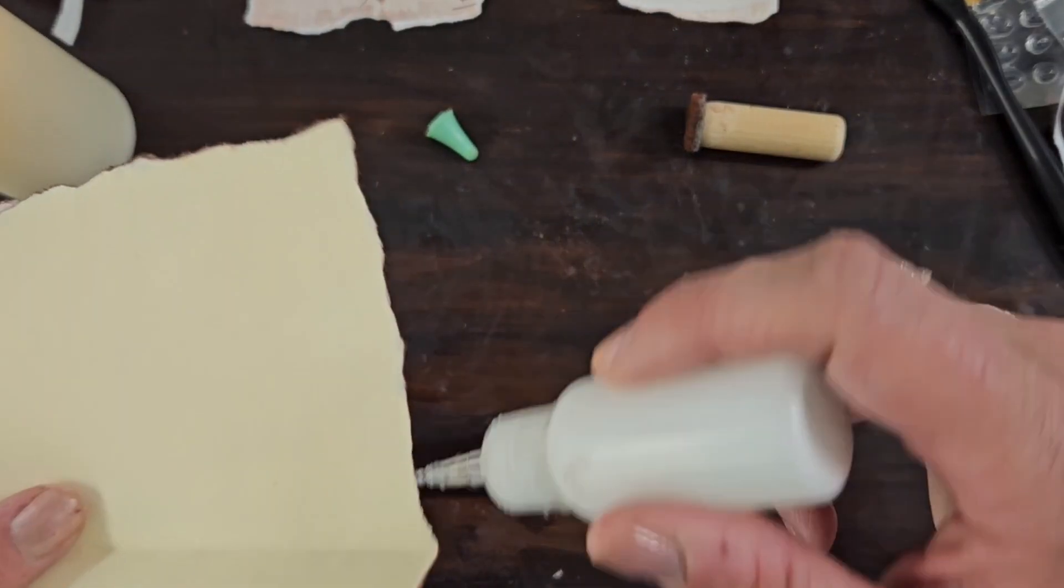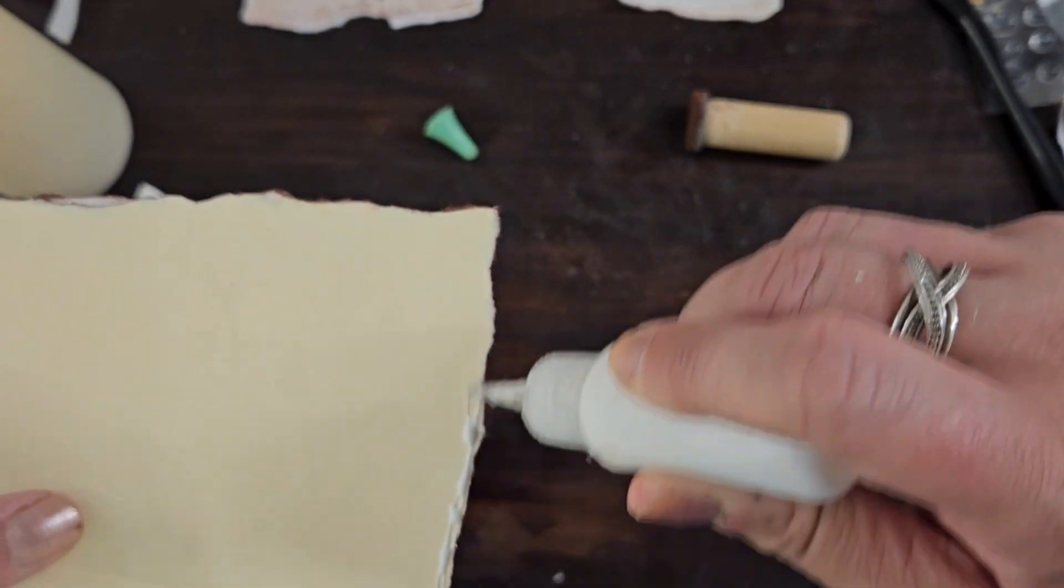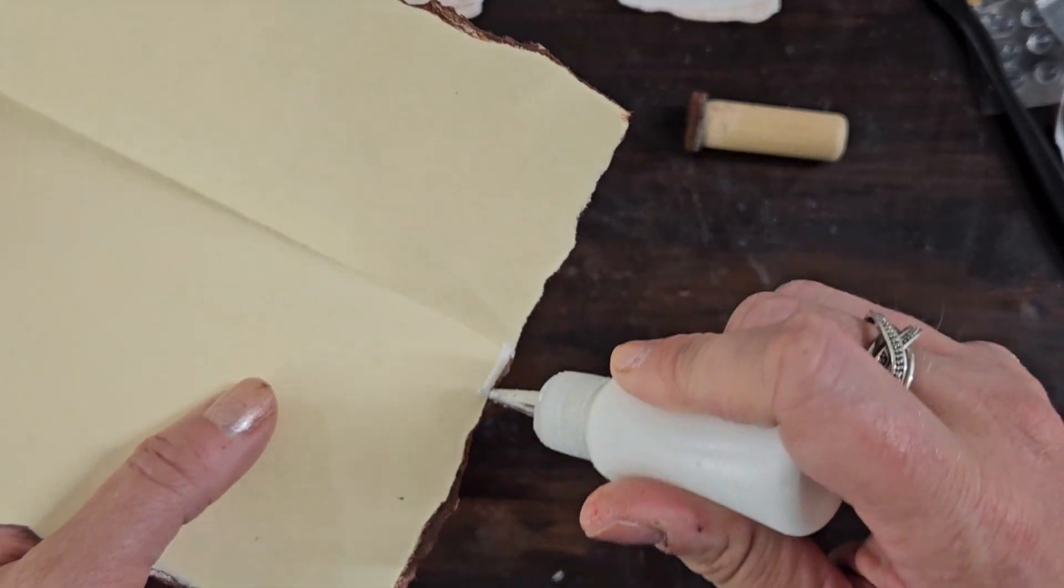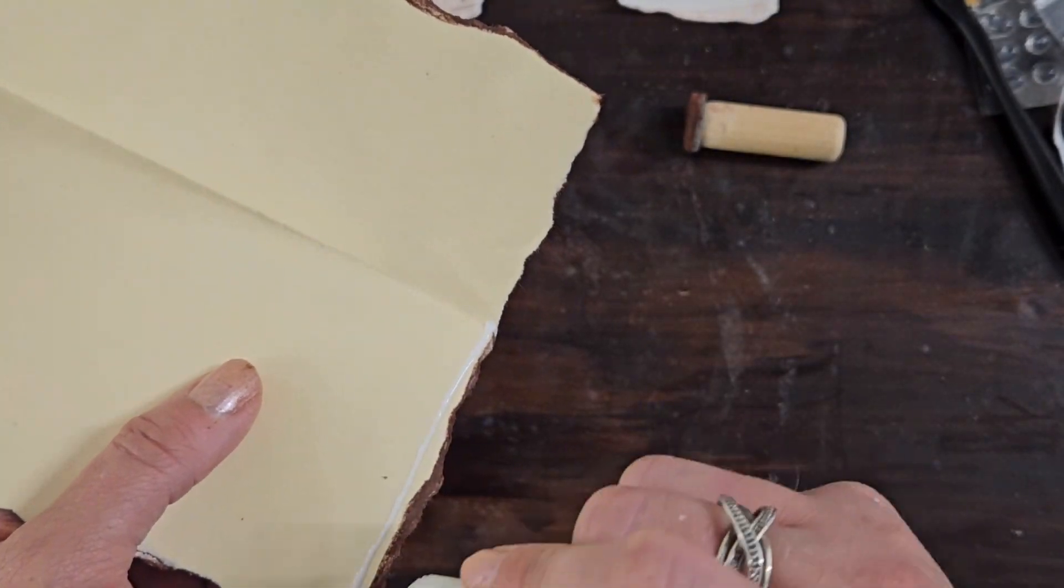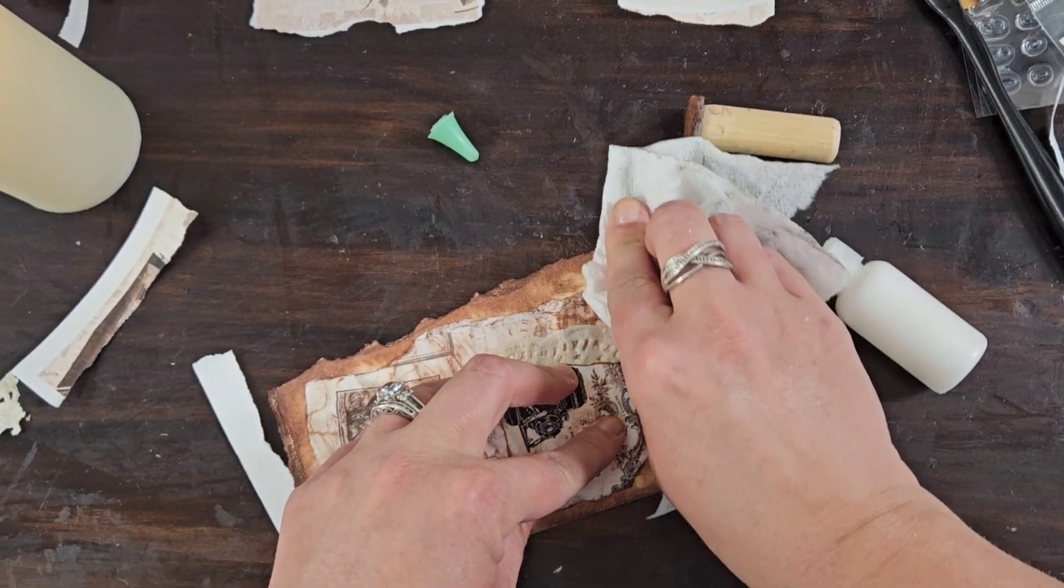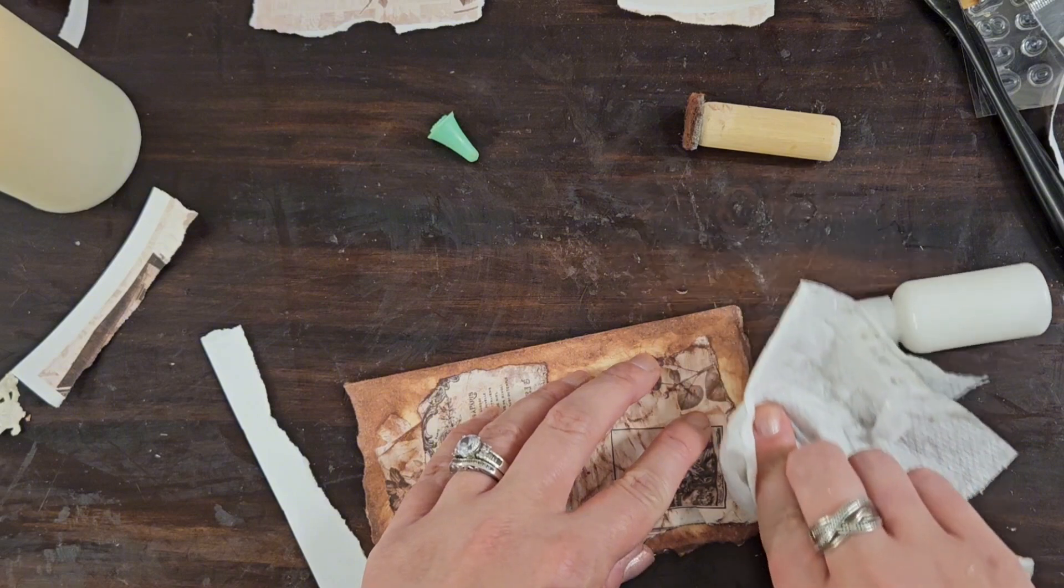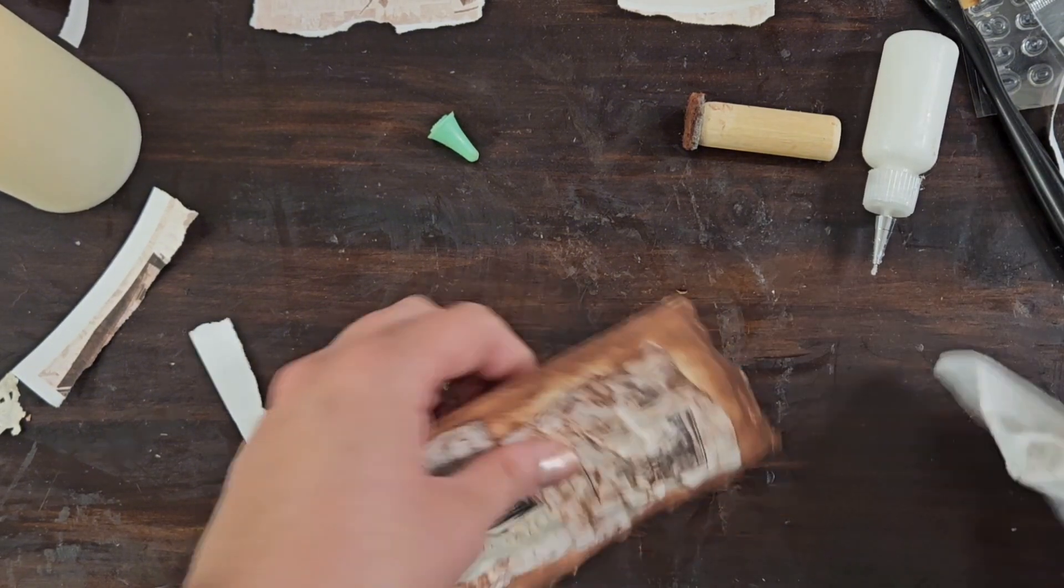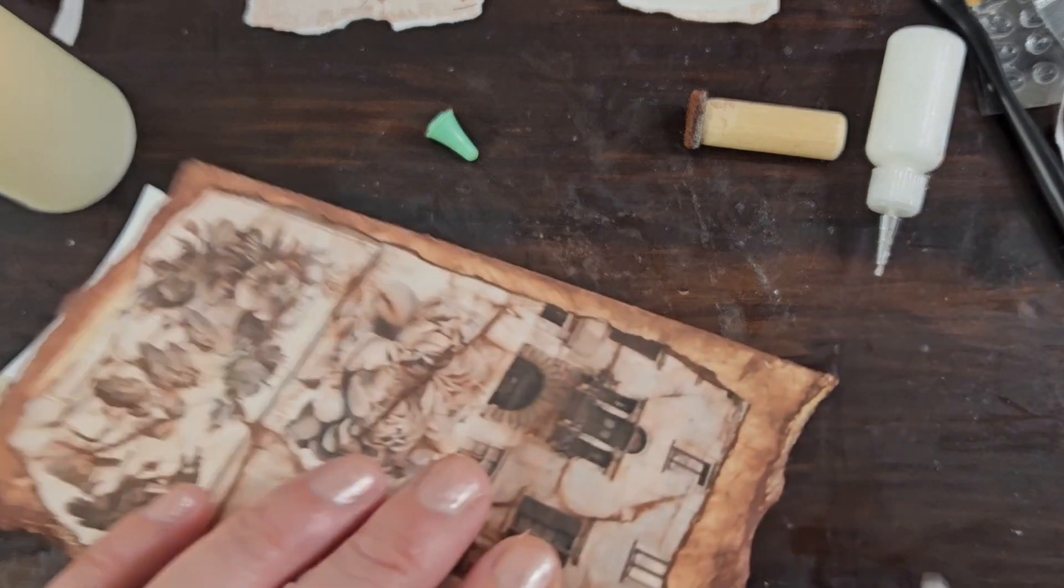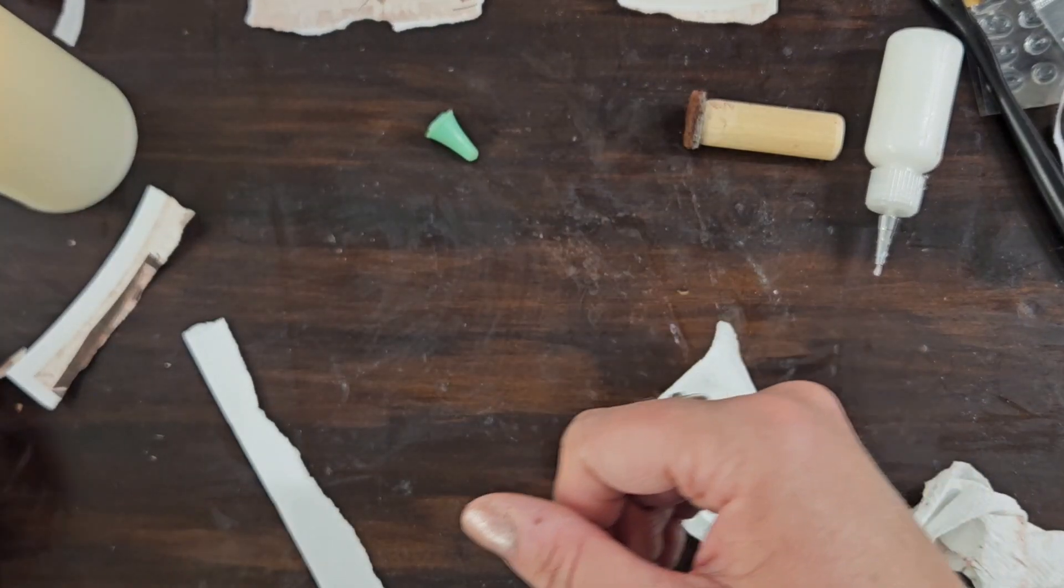So now we can just go ahead and glue our sides so our pocket will shut. All right, so we have a decent sized pocket and now that's going to dry for a couple minutes while we're making our tags.